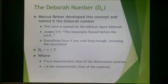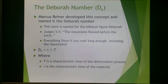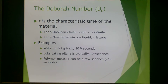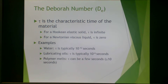The Deborah number is De, and De equals tau over t. t is the characteristic time of the deformation process — the length of our experiment — and tau is the characteristic time of the material. For a Hookean elastic solid, tau is infinite. For a Newtonian viscous liquid, tau is zero.